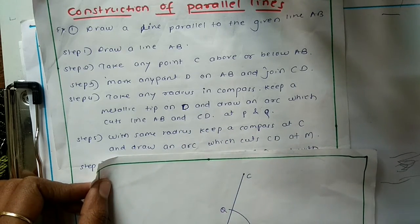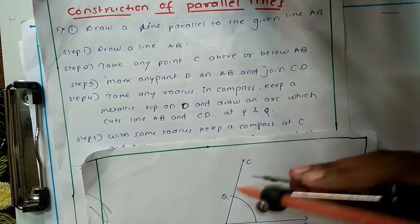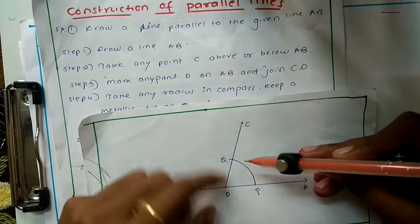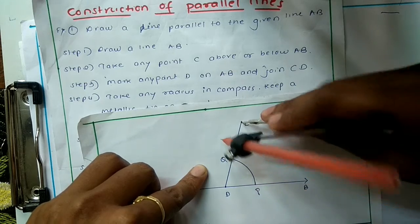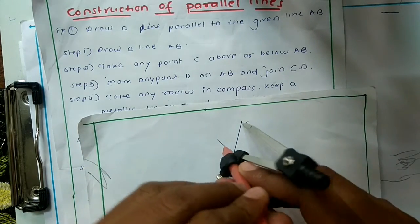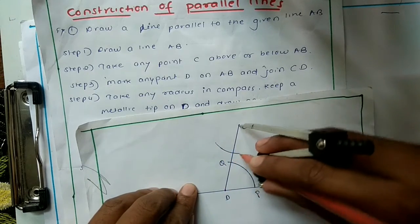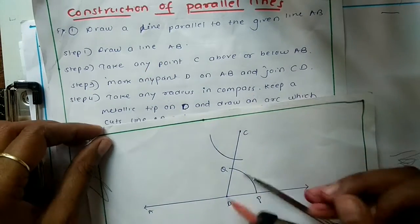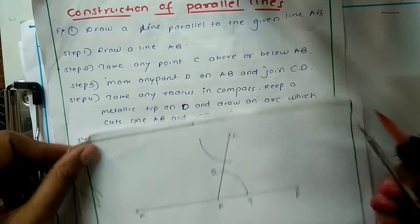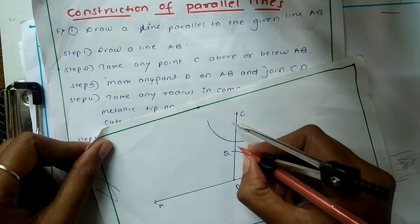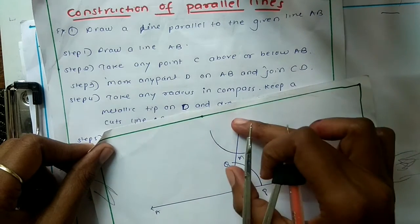With the same radius, keep the compass at C and draw an arc which cuts CD at M. Whatever you did at point D, the same procedure you have to follow at point C. To draw the parallel line we need two points — point C is one, and we will get one more point horizontally aligned with C. The arc cuts CD at M — let us name this as M.